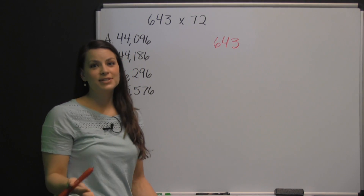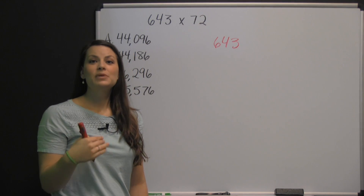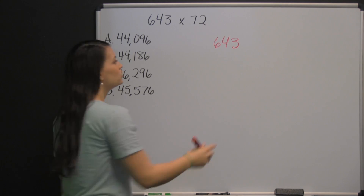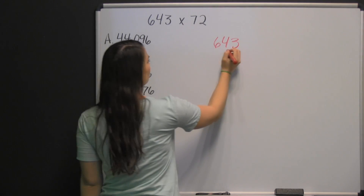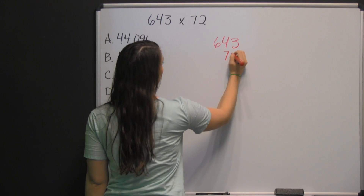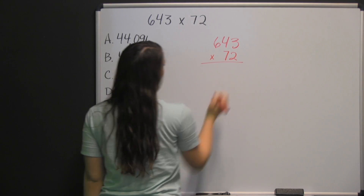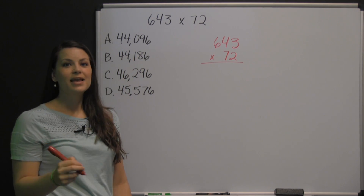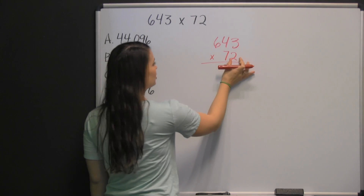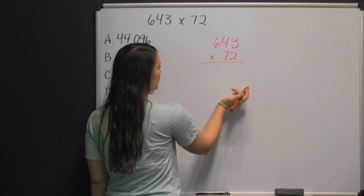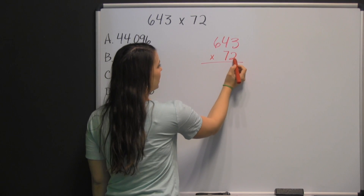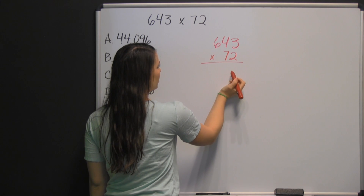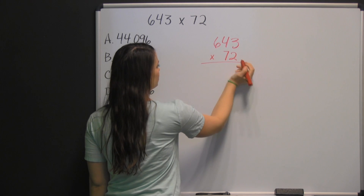Multiplication is commutative, which means you can multiply the numbers in any order. So, by putting the bigger number on top, you'll have to do less work to get your answer. Now, you start with the digit in the ones place, and you take this digit and multiply it times each number in your first number.